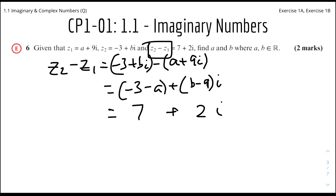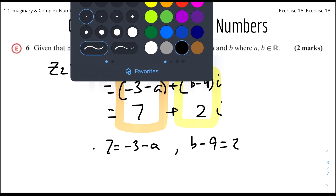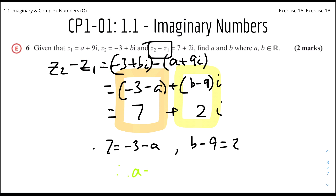We know this equals 7 plus 2i, so we equate the real and imaginary parts. Real part: minus 3 minus a equals 7, giving a equals minus 10. Imaginary part: b minus 9 equals 2, giving b equals 11.